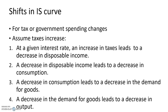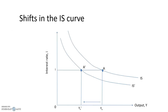Regarding shifts in the IS curve: for tax or government spending changes, assume taxes increase. At a given interest rate, an increase in taxes leads to a decrease in disposable income, which leads to a decrease in consumption, which leads to a decrease in demand for goods, and therefore a decrease in output. As shown in the figure, an increase in taxes shifts the IS curve to the left.